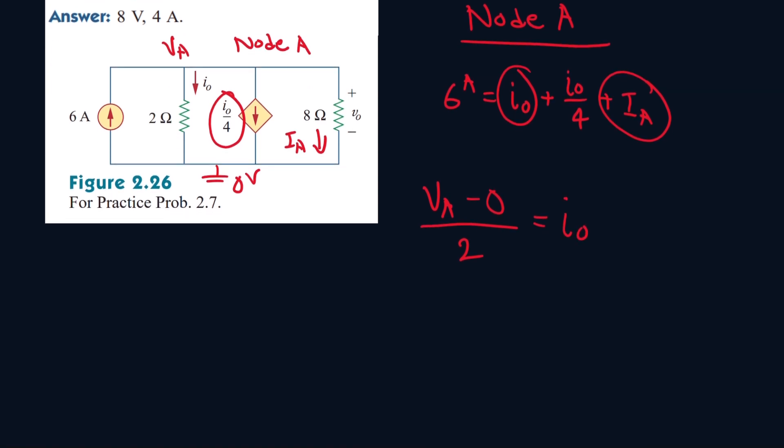And then IA, again, it goes from a high potential to a low potential all over the resistor, which is 8 ohms. So I0 will be VA over 2 and IA will be VA over 8.